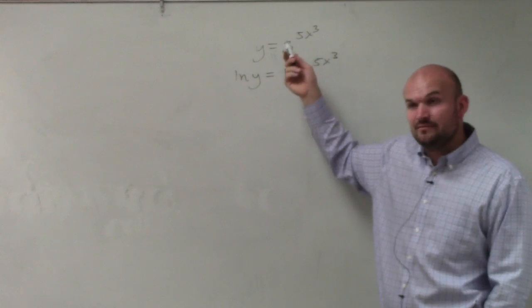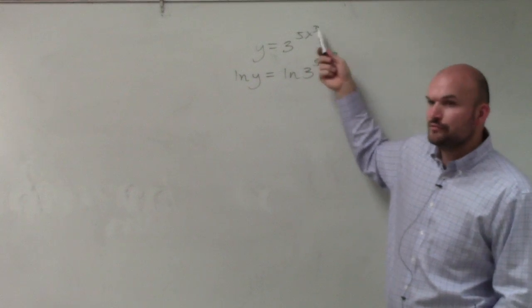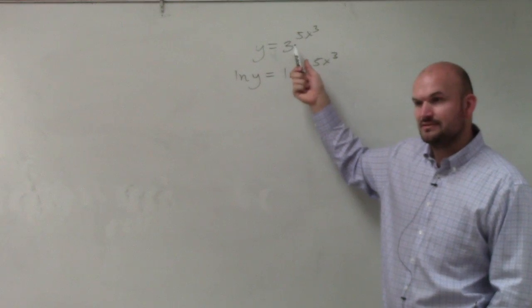No, if it was base e, we wouldn't have to do this, right? We could easily just take the derivative using the chain rule. But at base 3, we don't have anything for that, correct?